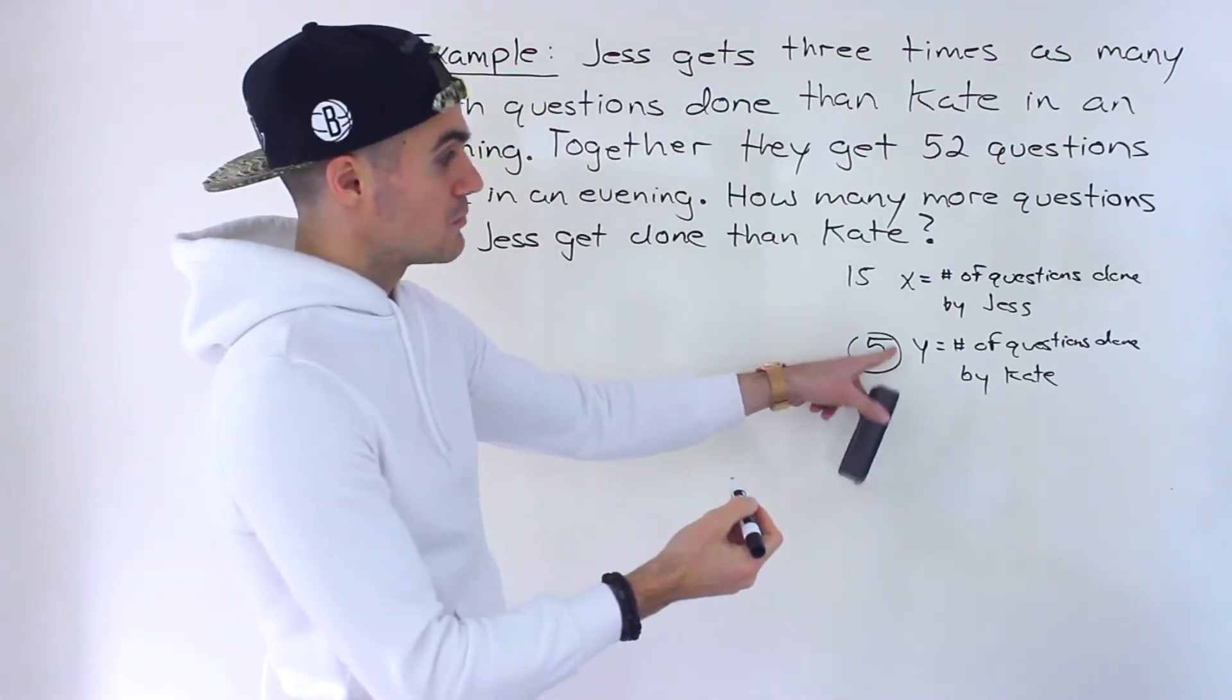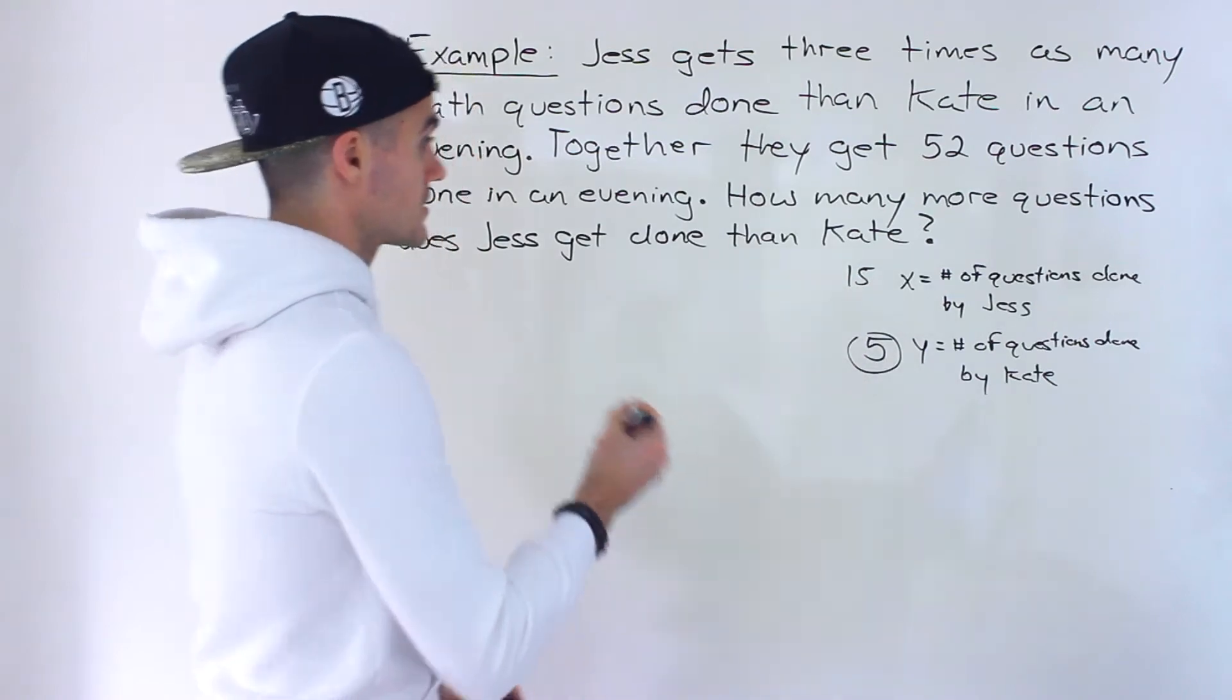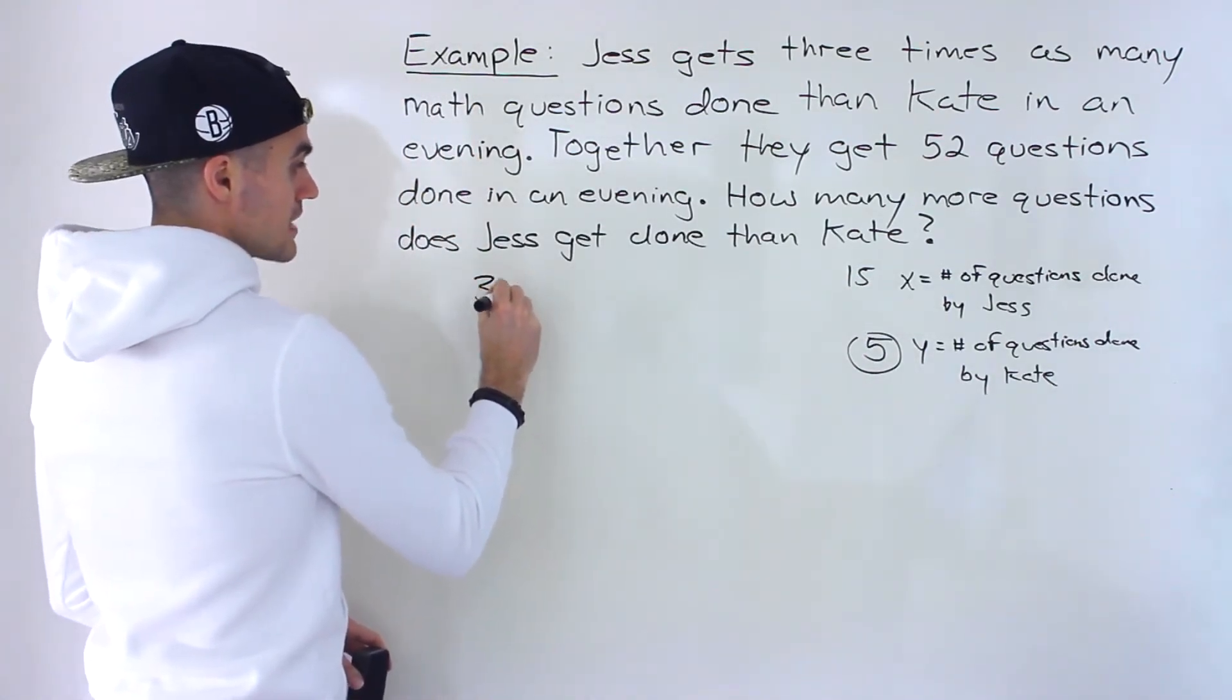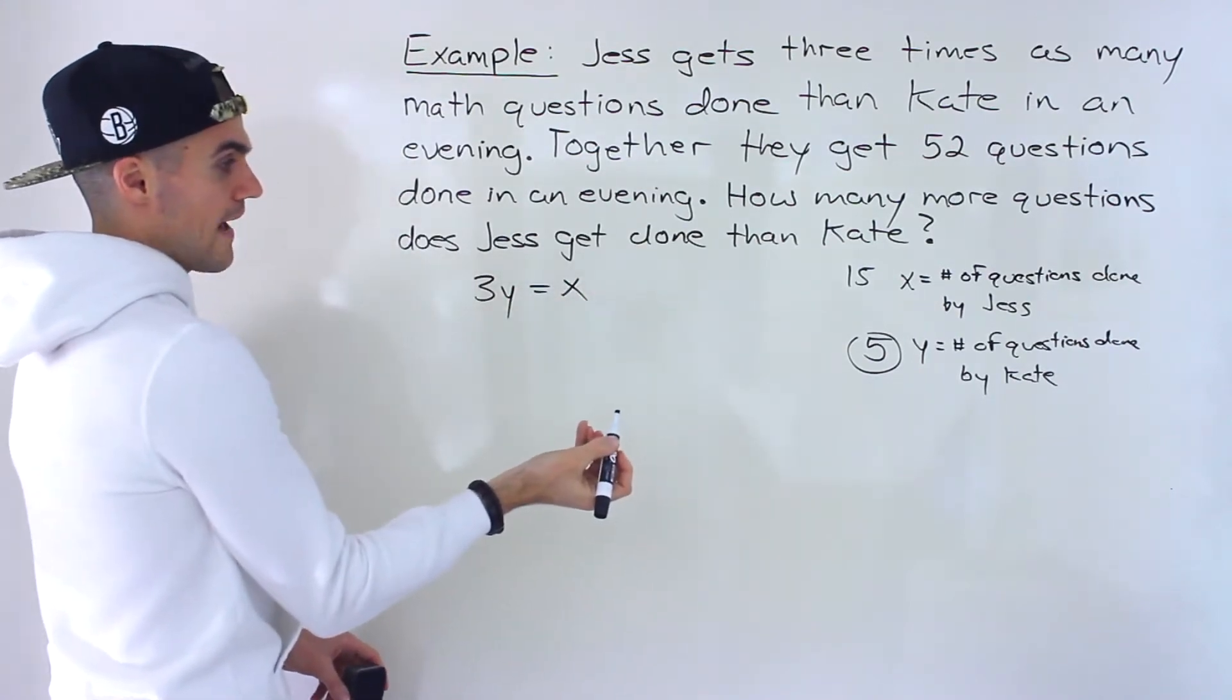So whatever y is, we multiply that by three and we're going to get x. So we can create an equation from that saying 3y is equal to x.